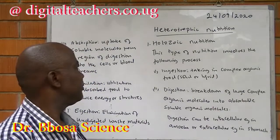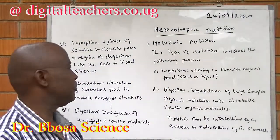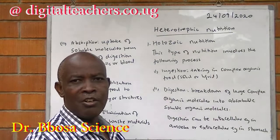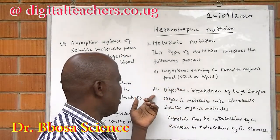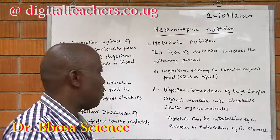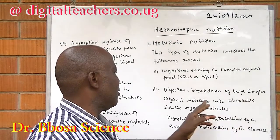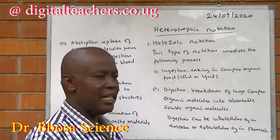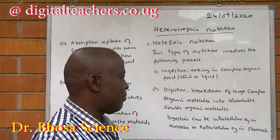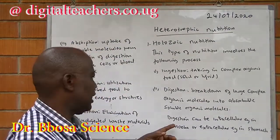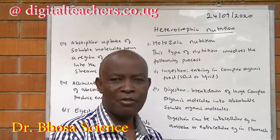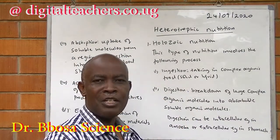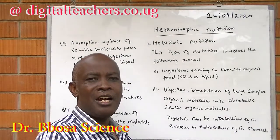Holozoic nutrition involves the following processes. One, ingestion: taking in complex organic food in solid or liquid form. Two, digestion: breakdown of complex organic molecules into absorbable, soluble organic molecules such as glucose and amino acids. Digestion can be intracellular within the cells, such as in amoeba, or extracellular, for example in man, where digestive juices are poured on the food in the stomach and digestion occurs outside the cells.